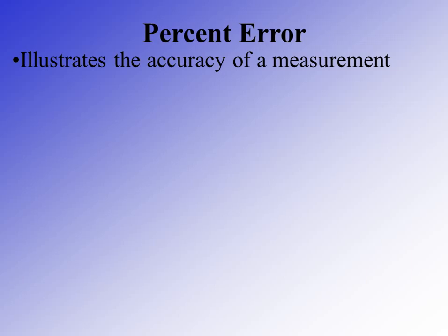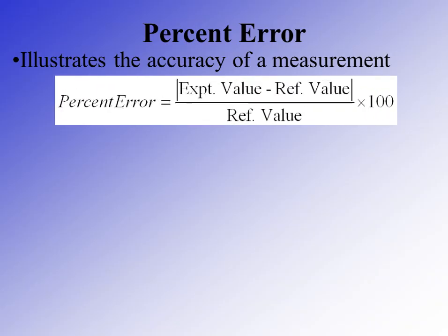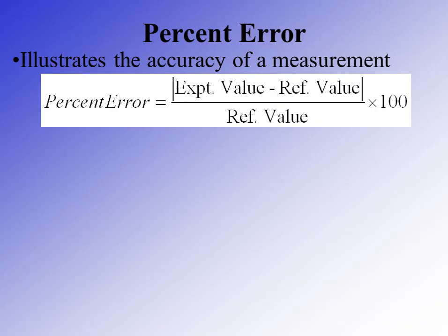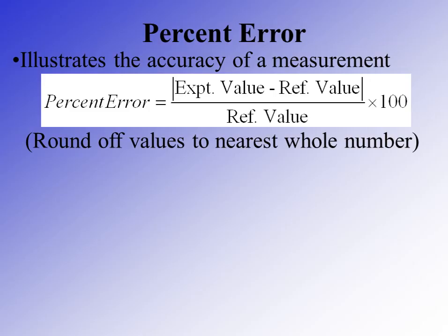One way to describe accuracy is through percent error. Using this equation: take the absolute value of the experimental value minus the reference value — the reference value being the actual or target answer from a data table or reference book — divide that by the reference value, and multiply by 100. The absolute value ensures your answer comes out positive. Usually we round to the nearest whole number, or to the nearest tenth if the result is less than one.